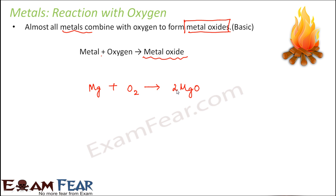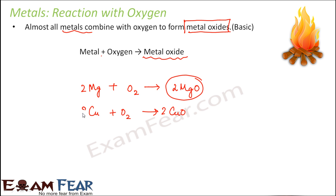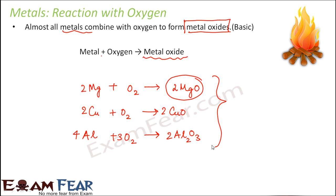If you want to balance the equation, this is how it would be. You can perform this experiment in the laboratory — take a magnesium ribbon and burn it. Burning happens in the presence of oxygen, and what you obtain is ash. That ash is nothing but magnesium oxide. Similarly, copper reacts with oxygen to form copper oxide, and aluminium reacts with oxygen to form aluminium oxide, Al2O3. So all metals form metal oxides.